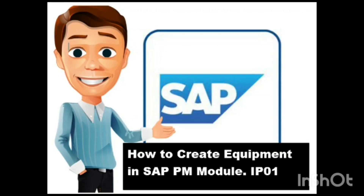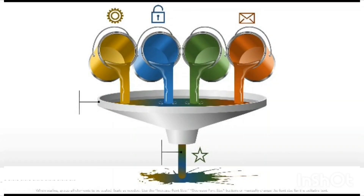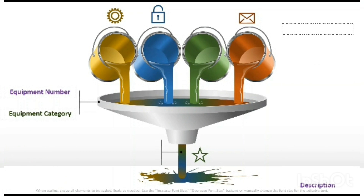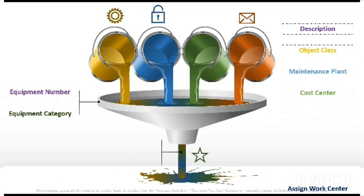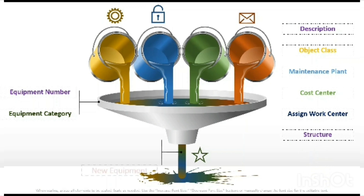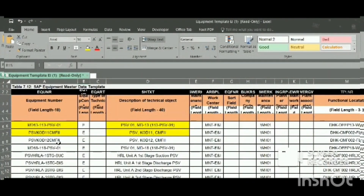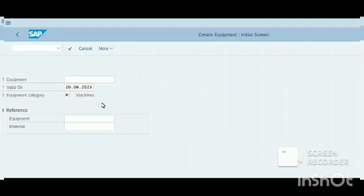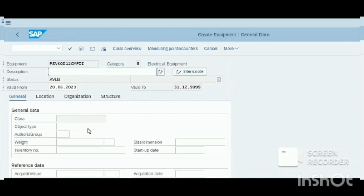Hello friends, how are you. In this video we will learn how to create a new equipment in the Plant Maintenance module in SAP. For this we need some basic and mandatory fields to fill out, that includes equipment number, equipment category, description, object class, plant, maintenance cost center, assign work center, and structure. In the end you will save it and you will get the new equipment. So watch the video and get some new things. Thank you.